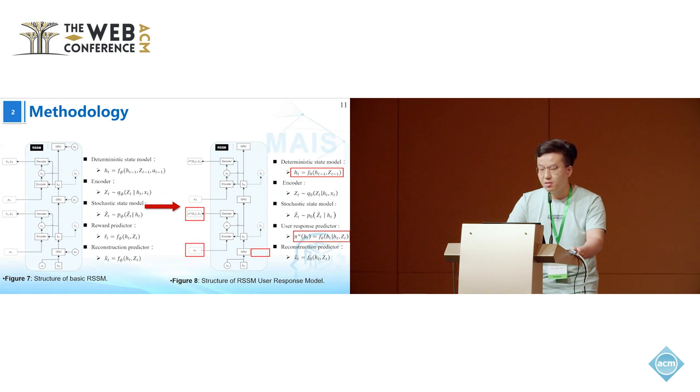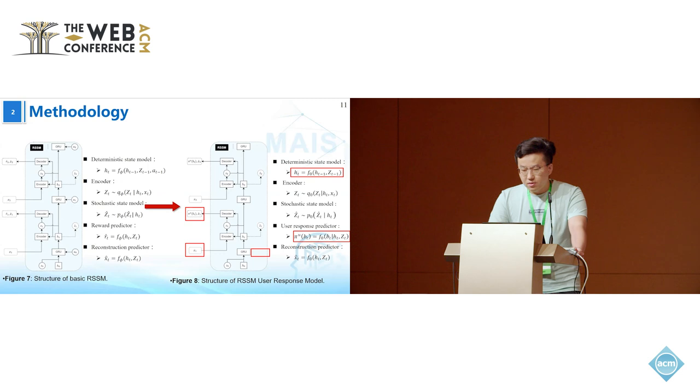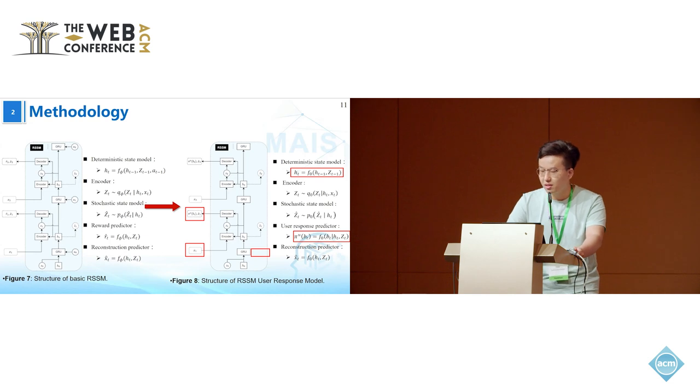The following is a section using RSSM to model impact of short-term random factors. Figure 7 shows the basic RSSM, which divides the state into a deterministic latent state H and a stochastic latent state Z. The former uses a GRU to carry forward past information and the influences of agent actions, while the latter incorporates current observation information X and captures impact of random factors through random sampling.